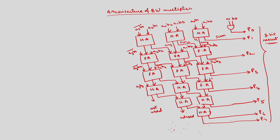We require wires w1 through w20. These two extra wires are not used, so no need to define them. Totally we require 21 wires. You can see now the Verilog code.